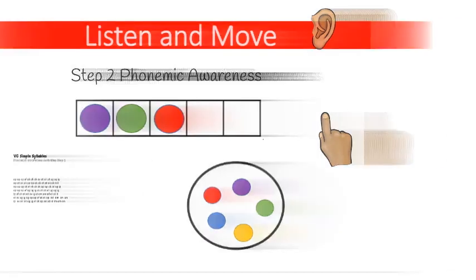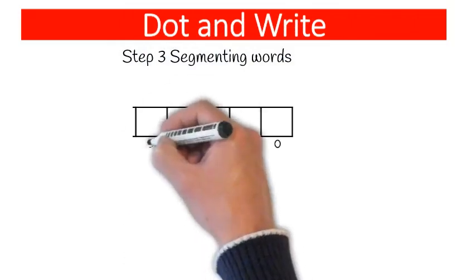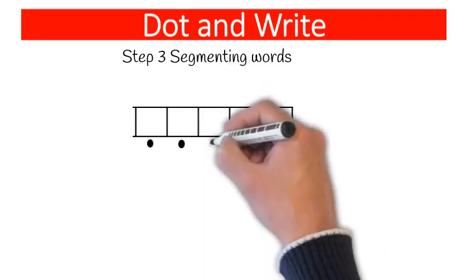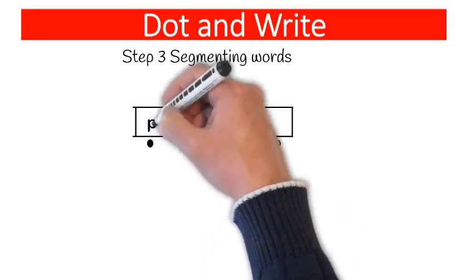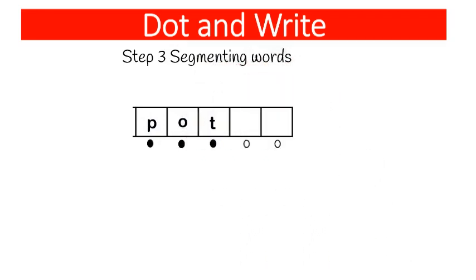The next step is Dot and Write. You're going to be segmenting words with your students. You'll say a word like 'pat,' and they will fill in the circles for each sound they hear, then write the corresponding letter to go along with the circles they filled in. This is an extremely helpful activity for both phonemic awareness and the ability to write out words they hear. I also encourage students to say the letters as they write them — P-O-T, 'pot.'